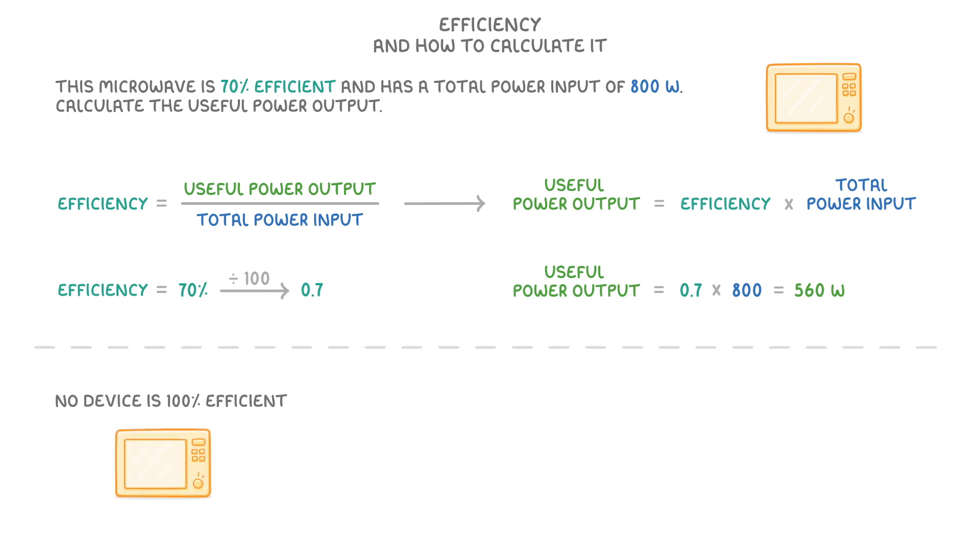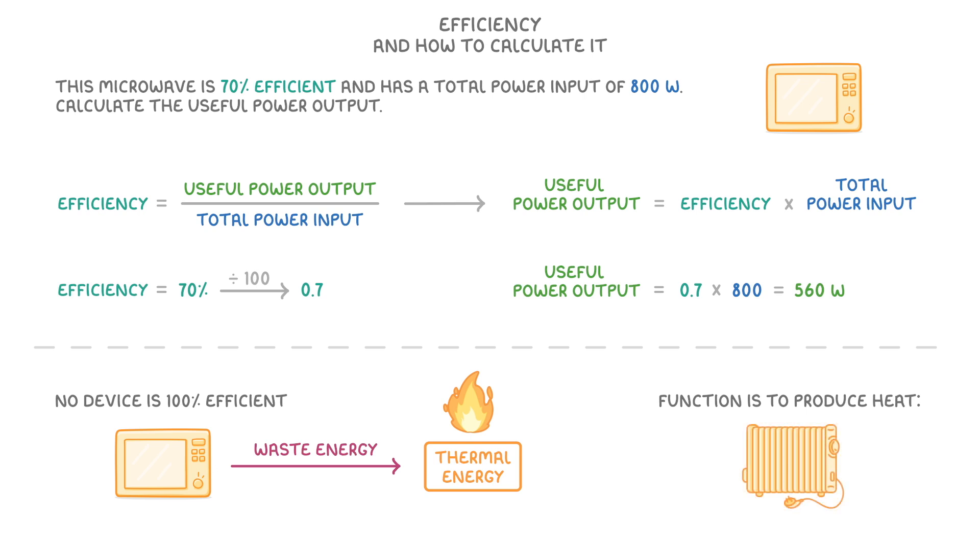Now, no device is 100% efficient because all devices produce some form of waste energy, most often in the form of thermal energy. An exception to this rule, though, is devices whose function it is to produce heat in the first place. For example, if electric heaters produce lots of thermal waste energy, then it isn't really waste and instead would count as useful output.